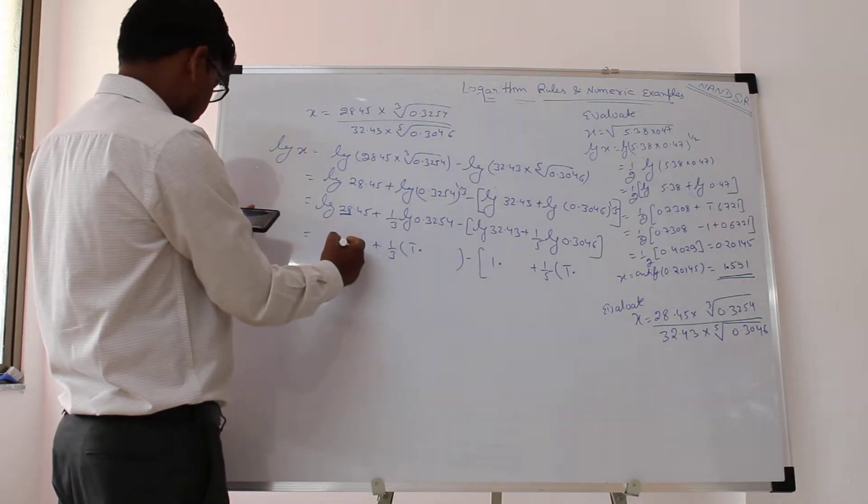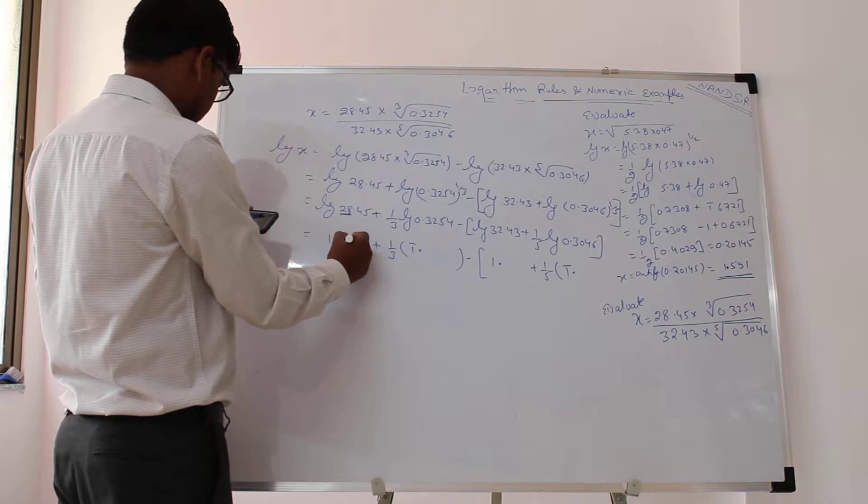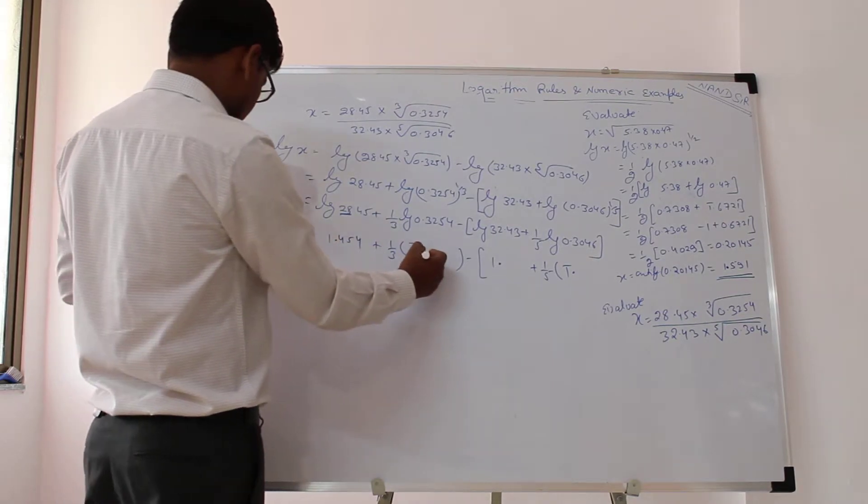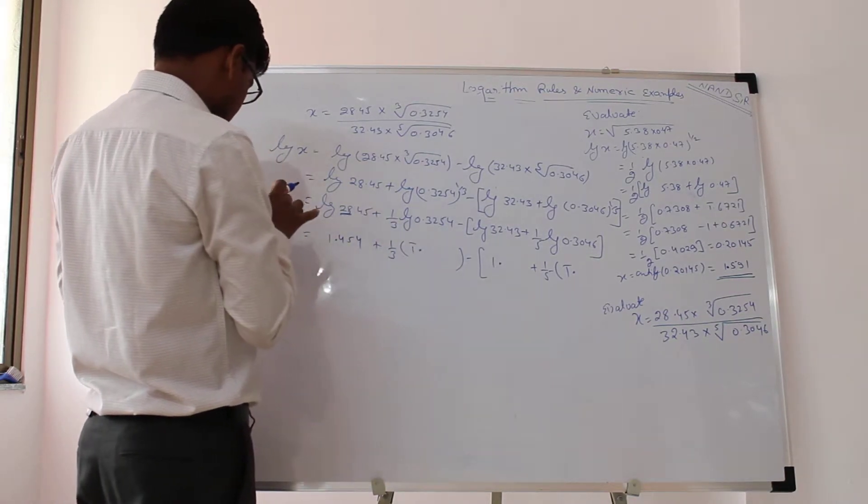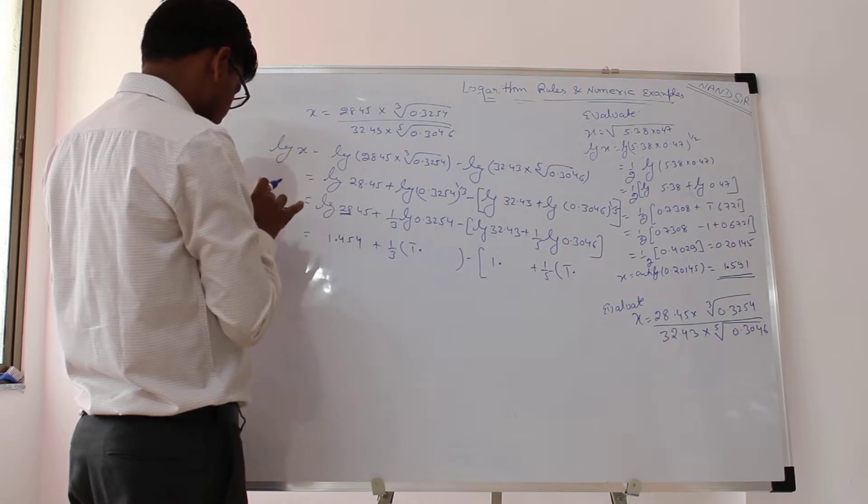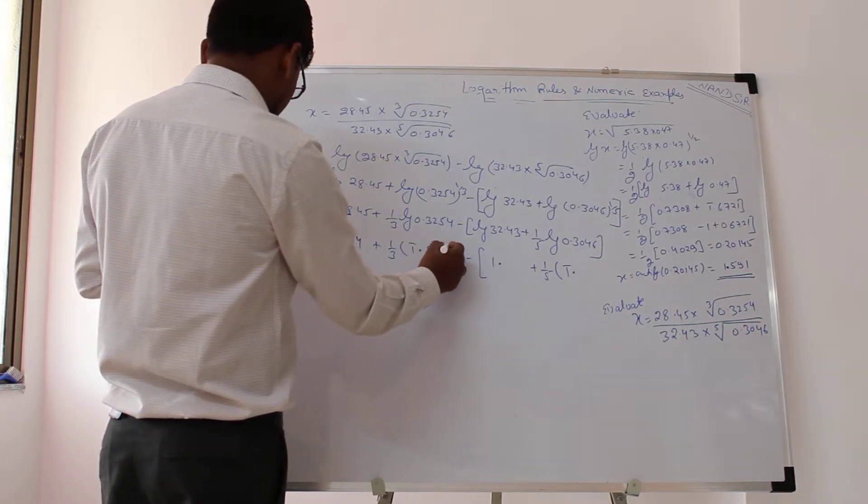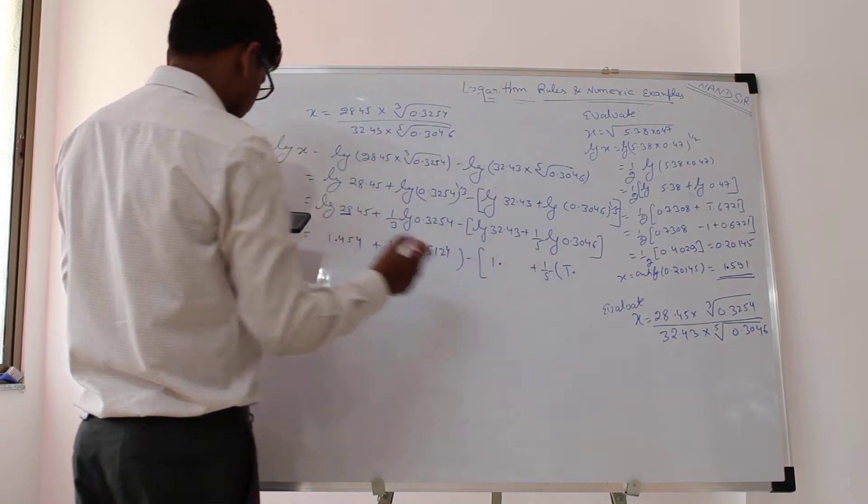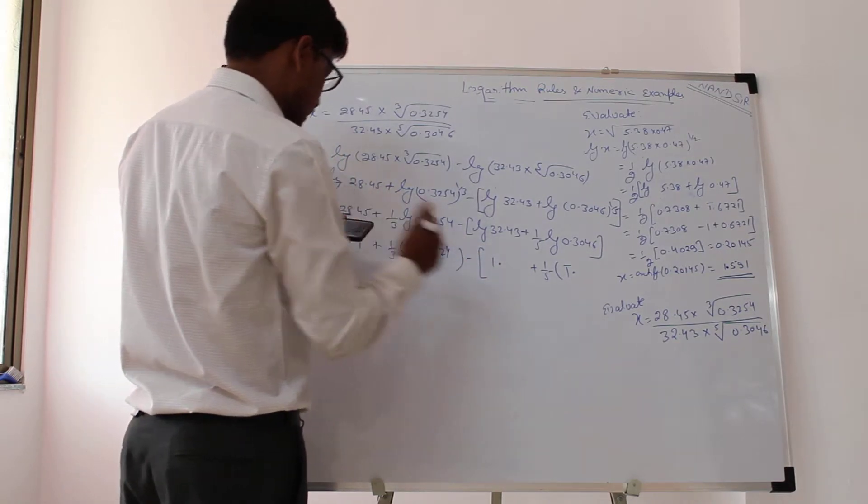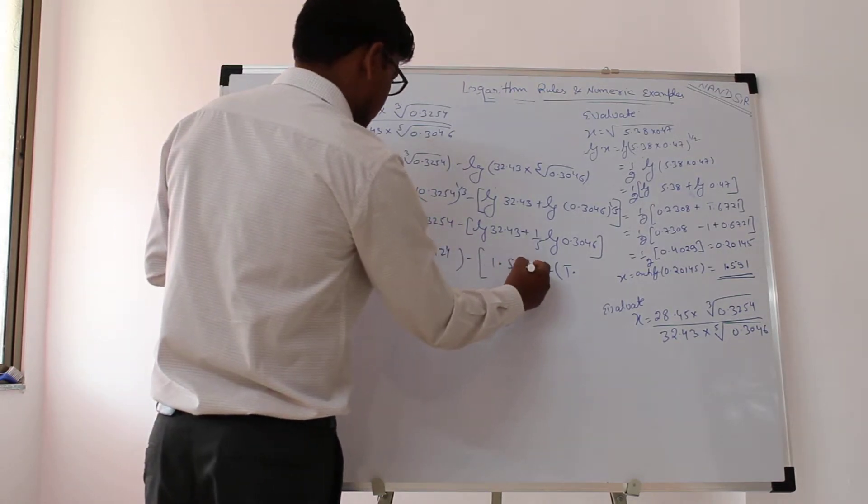So it is 1.454, this is 1 bar, and then it is 0.5124, this is 0.5109.